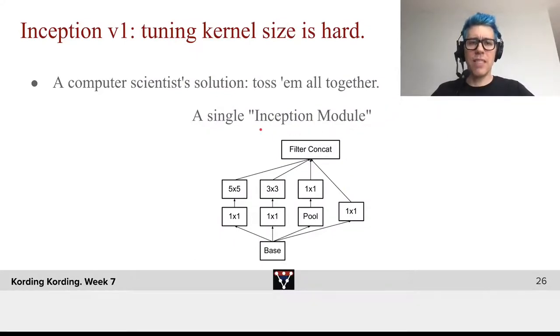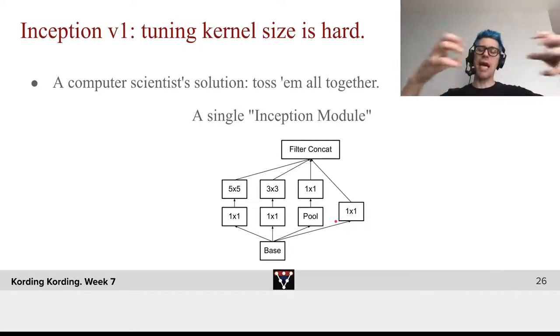In the first version of inception, kernel size tuning is hard. Should we use a 5x5 kernel, or a 3x3 kernel, or no kernels at all? It's hard to know. If you're Google, why decide if you can have all of them? That's what they did. They first have a 1x1 layer that allows you to make more feature dimensions, followed by a 5x5, also a 1x1 followed by a 3x3, then a pooling layer followed by a 1x1, and a direct 1x1. Then they concatenate all of these together. That produces an inception module.